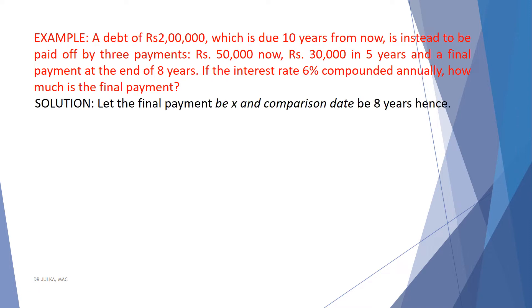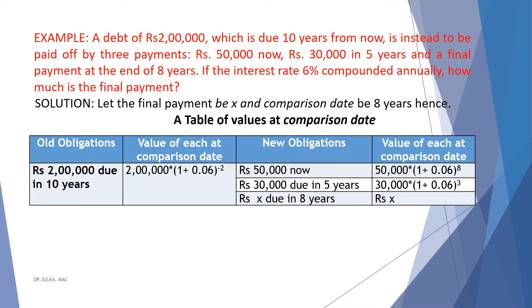Let the final payment be x and the comparison date be 8 years hence, because the final payment is made at the end of 8 years. Now we prepare a table of values at comparison date. The old obligation is Rs. 2,00,000 which is due in 10 years, and the comparison date is 8 years, so we will save interest of 2 years. The value of this 2,00,000 at the comparison date is 2,00,000 multiplied by 1.06 raised to the power minus 2.